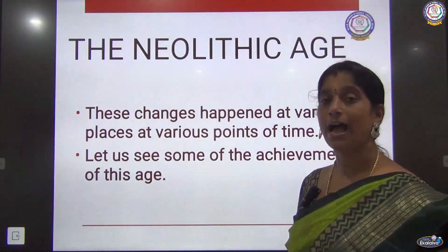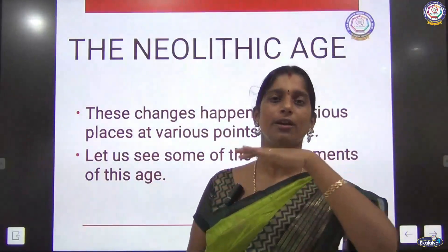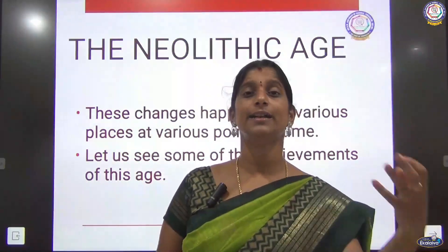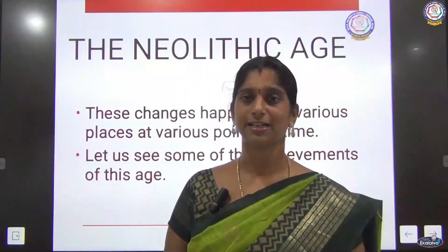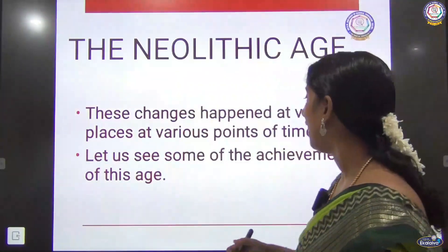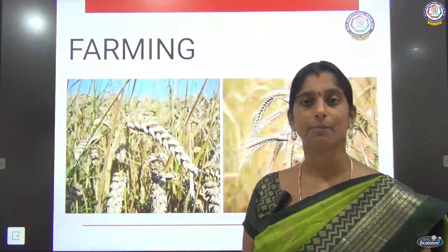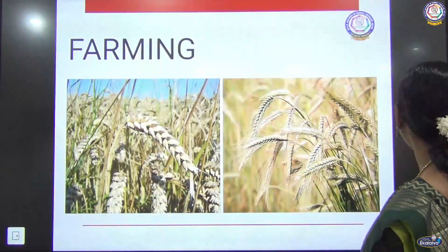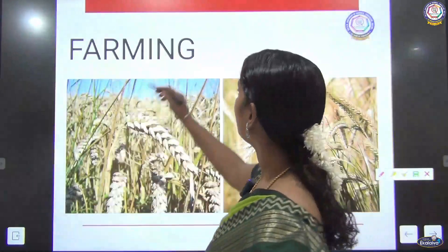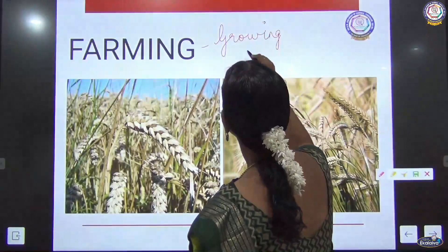This change happened in various places at various points of time — not all at the same time. Just as the old stone age itself started at various places at various points of time, these changes also happened at various points. We are going to see some of the achievements of this age. The first achievement is farming — they learned they could grow grains on their own. Farming means growing crops or grains.